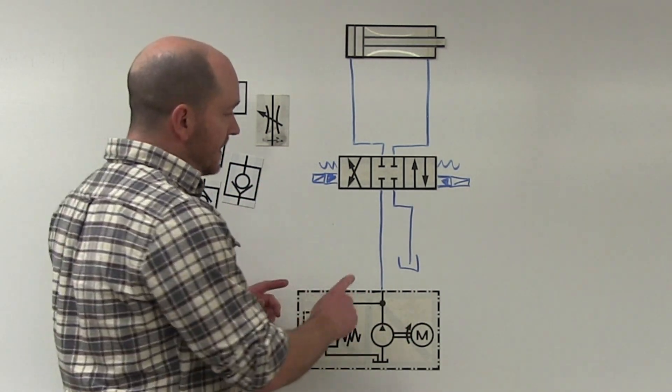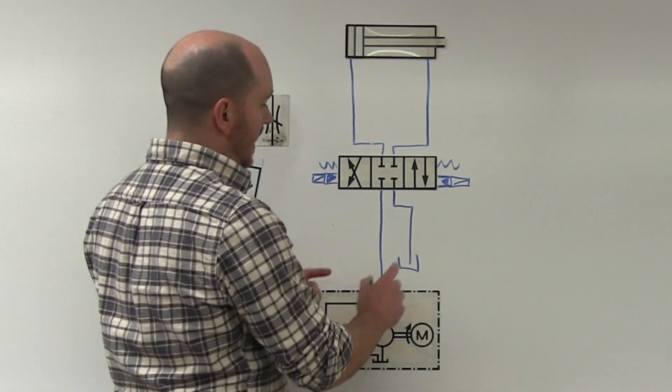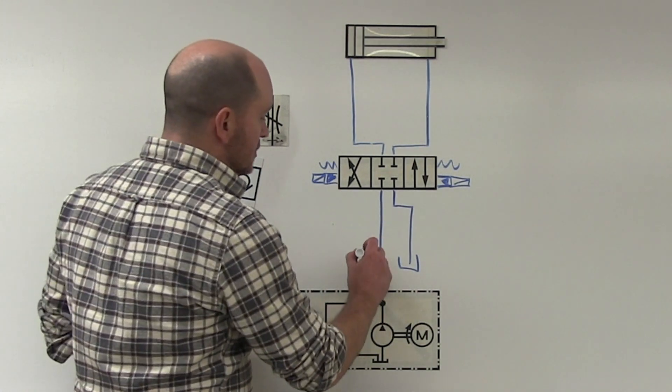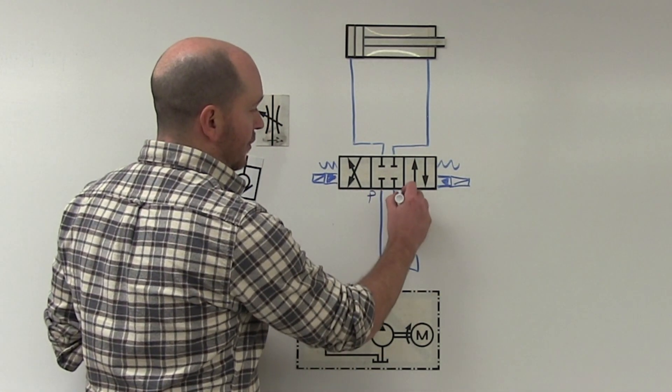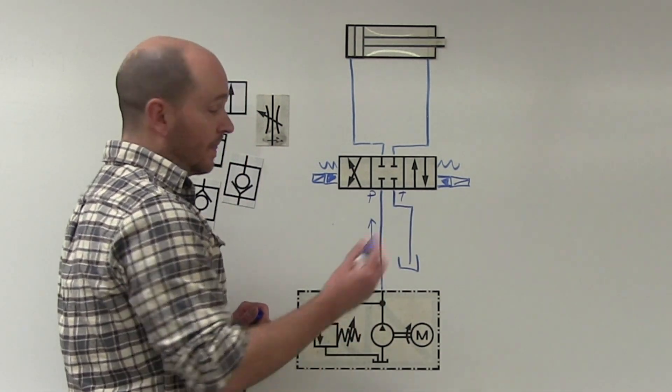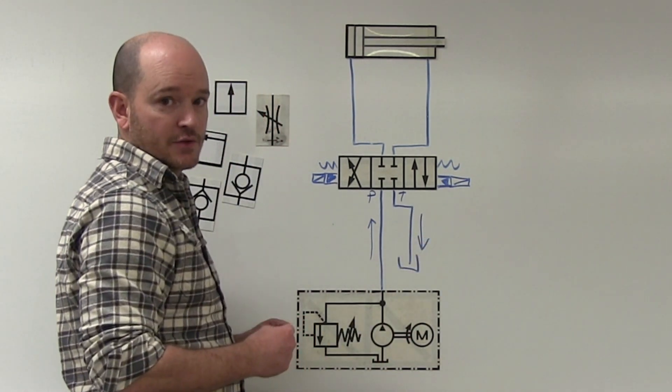The reason it's true is because before the directional control valve schematically, oil only goes in one direction. So on my pressure line, this is my pressure port, this is my tank, oil only flows in this direction. Going back to tank, it only goes back this direction.